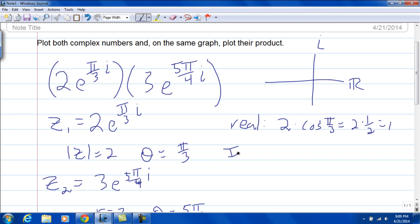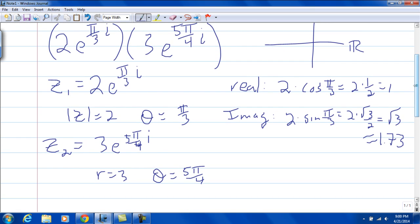For the imaginary, it's going to be 2 times sine of pi over 3, which is 2 times the square root of 3 over 2, which is going to be the square root of 3, which is approximately 1.73. And then that gives us the x and y for the first point.